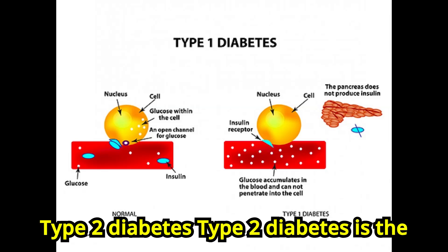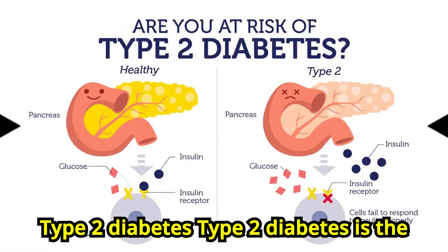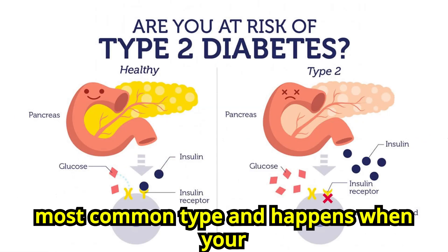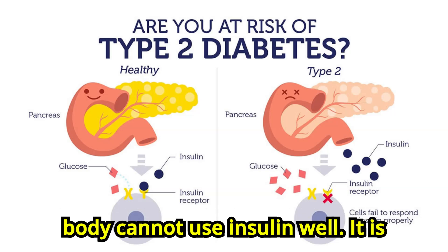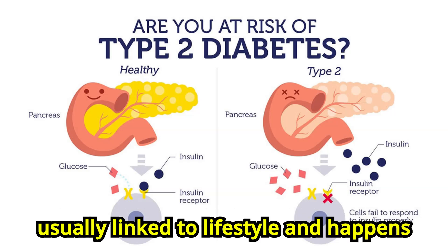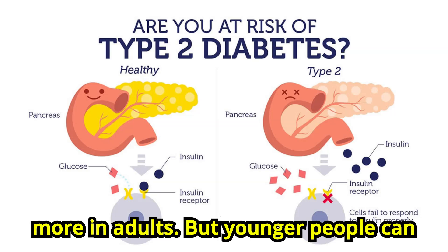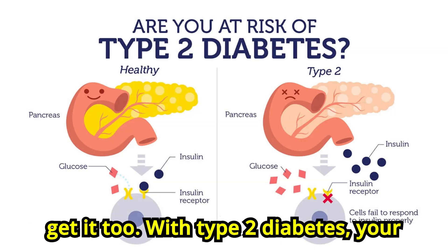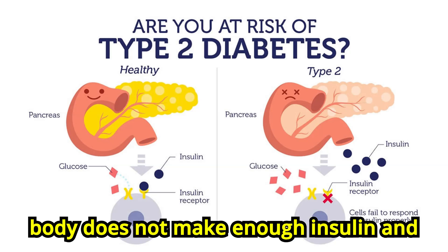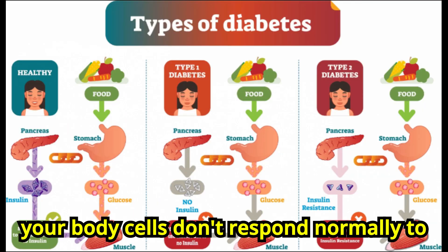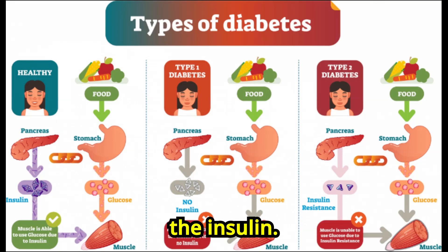Type 2 diabetes is the most common type and happens when your body cannot use insulin well. It is usually linked to lifestyle and happens more in adults, but younger people can get it too. With type 2 diabetes, your body does not make enough insulin and your body cells don't respond normally to the insulin.